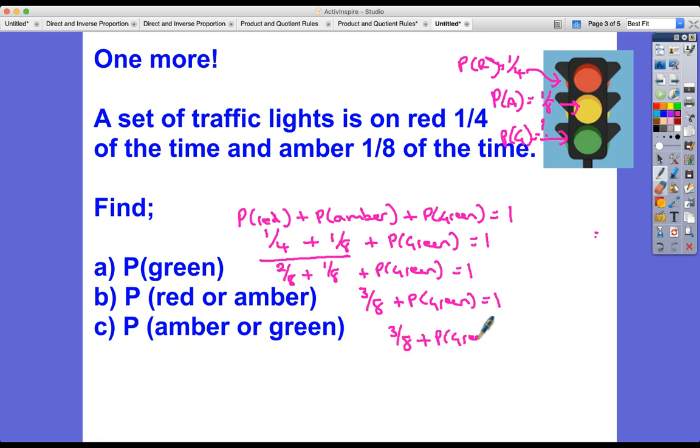The probability of green is one. And three-eighths plus the probability of green, we've been very long-winded here, hopefully following. How many eighths is one? It's eight-eighths. So what's the probability of green got to be? Well, what do you have to add on to three to make eight? Probability of green must be five-eighths, eight-eighths subtract three-eighths if you like.